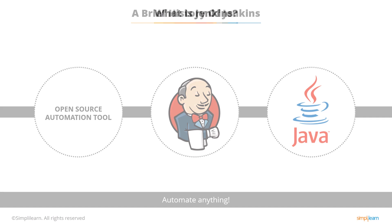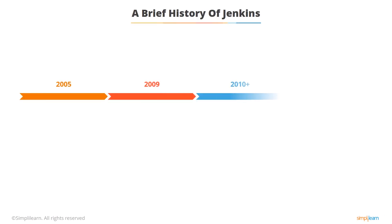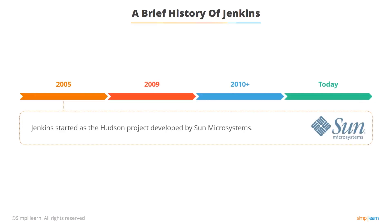Now let's go into the history lesson. Jenkins originally started as the Hudson project, developed by a company called Sun Microsystems. The Hudson project's success was recognized during the JavaOne convention, and it was awarded the Software Dukes Award in the developer solution category.